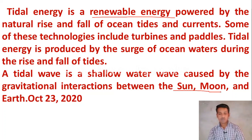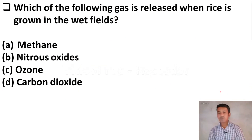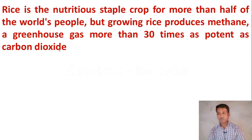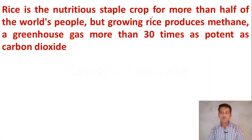Next question: which of the following gas is released when rice is grown in wet pits? Option A, methane. Option B, nitrous oxides. Option C, ozone. Option D, carbon dioxide. The right answer is Option A — methane is released when rice is grown in wet pits. Rice is a nutritious staple crop for more than half of the world's people, but when we grow rice, methane, a greenhouse gas, is released.